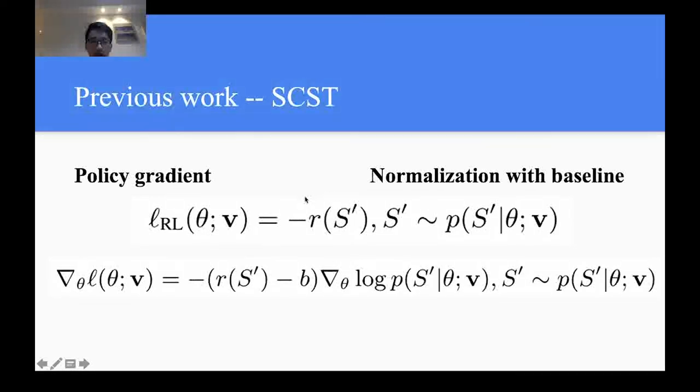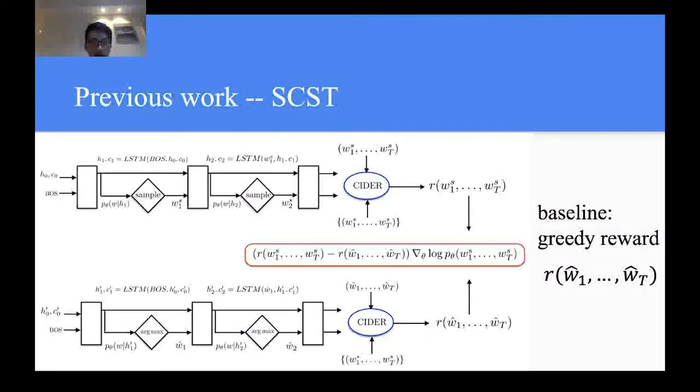As the equation shows, the loss is defined as the negative expected reward of the sample sentences. The gradient to the network parameters theta is defined as the gradient to the log probabilities times the negative reward. Since the reward is based on sampled sentences, it has high variance, so many studies focus on subtracting a baseline to reduce the high variance.